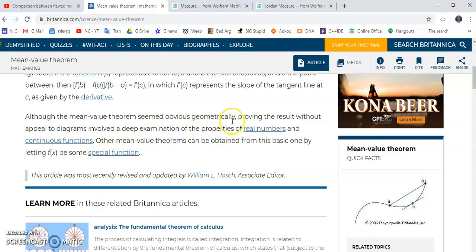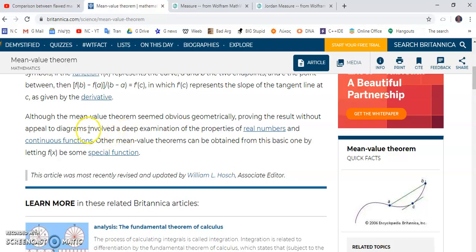It says, although the mean value theorem seemed obvious geometrically, well, to be quite frank, the idiots who came before me didn't even understand it geometrically. They still don't understand it. Mainstream academics are incorrigibly stupid. Proving the result without appeal to diagrams involved a deep examination of the properties of real numbers. And when you read things like involved a deep examination of the properties of real numbers, you must start thinking very carefully, because that's a red flag. It's something which basically tells you that the concepts are not clearly understood, especially given the fact that there is no such thing as a real number. There is no valid construction of real number. The only numbers that can actually be well-defined are the rational numbers.